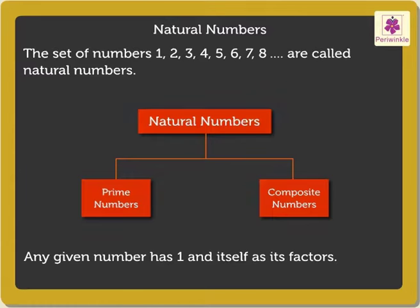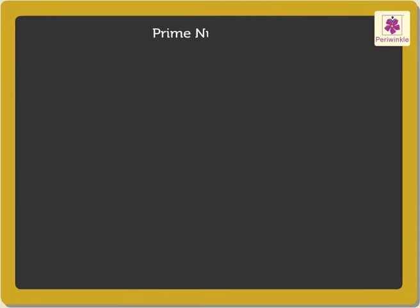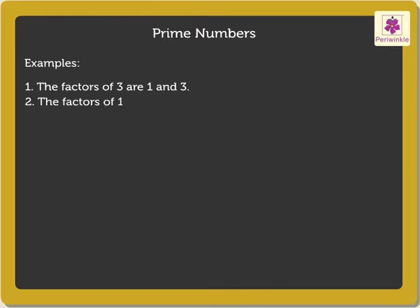Now, let us start with prime numbers. Look at the examples. The factors of 3 are 1 and 3. The factors of 11 are 1 and 11. The factors of 17 are 1 and 17.